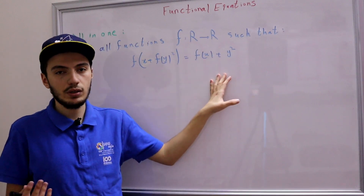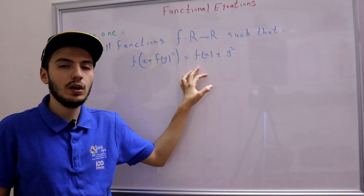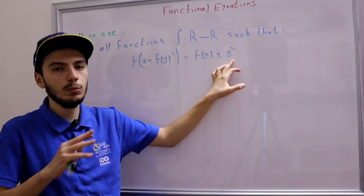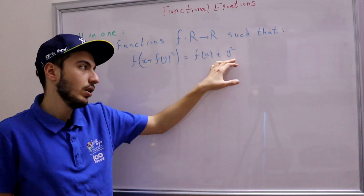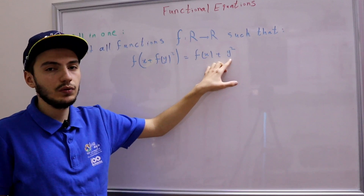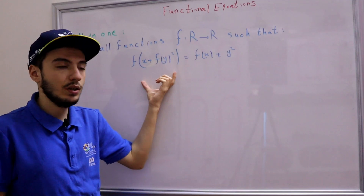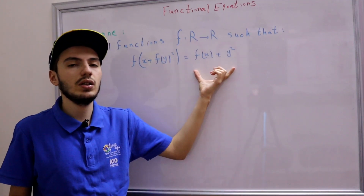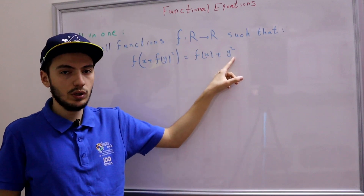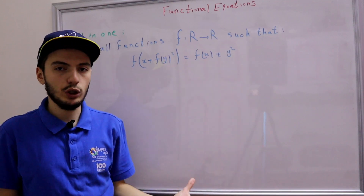If we want to show that f is surjective, the free variable is clearly y², but the problem is that it's not completely free because it's y² — it has to be positive. So in order to show that f is surjective, f of something here is not necessarily surjective because y² must be positive, so we cannot cover all real numbers. Right now we cannot show that f is surjective.